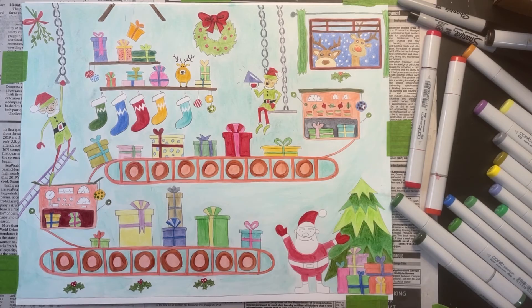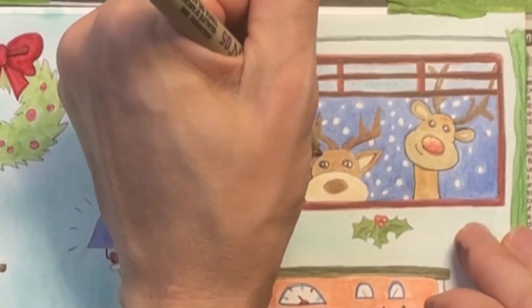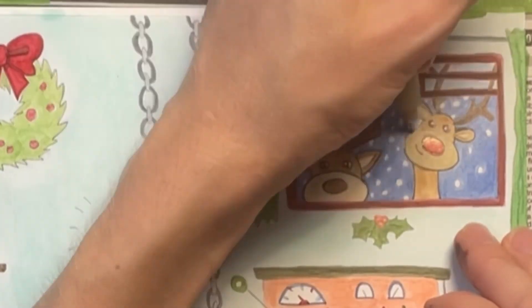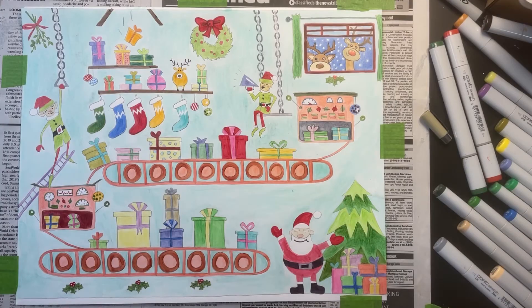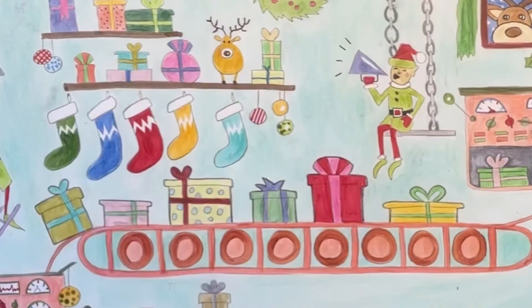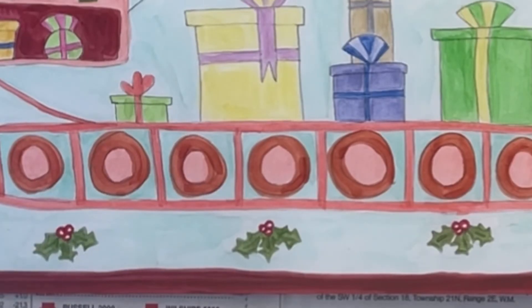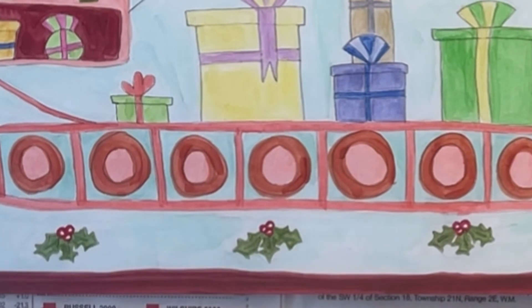When I'm done coloring, I like to grab an ultra fine sharpie and outline parts of my picture to make them pop. You can also use a black colored pencil for this. Oh yeah, you can also see that I added some holly at the bottom of my picture here. I love how that looks.